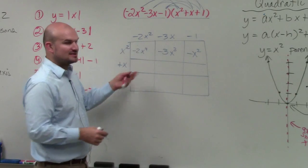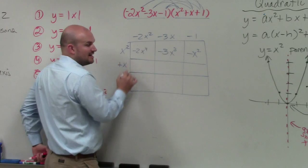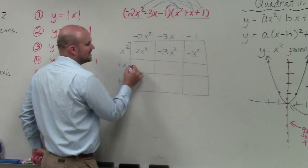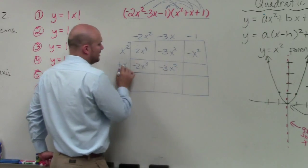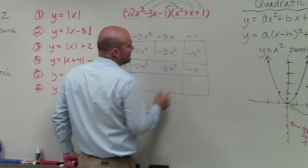Now I go to the next box. All of these boxes have a length of x. x times negative 2x squared is negative 2x cubed. x times negative 3x is negative 3x squared. x times negative 1 is negative x.